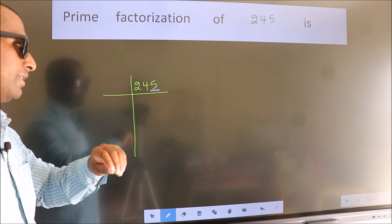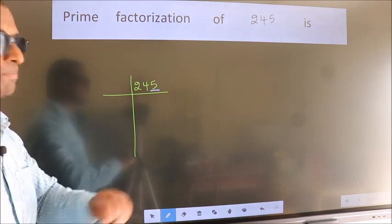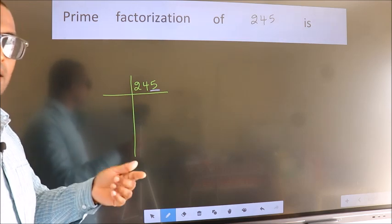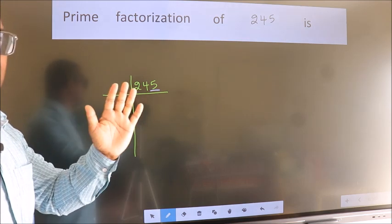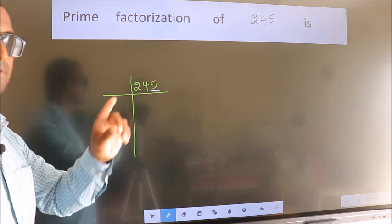Is 11 divisible by 3? No, so this number is also not divisible by 3. Next prime number 5. Last digit is 5, so this number is divisible by 5.